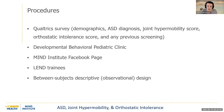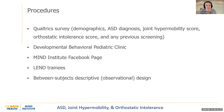For procedures, I used a Qualtrics survey which asked about demographics, autism diagnosis, joint hypermobility score, orthostatic score, and whether they had any previous screening. This was distributed to the developmental behavioral pediatric clinic, the MIND Institute Facebook page, and to my fellow trainees. This was a between-subjects descriptive observational design.